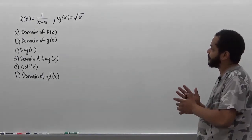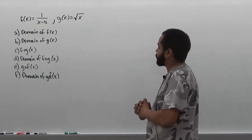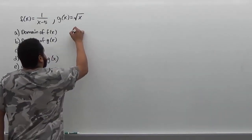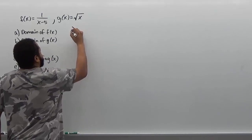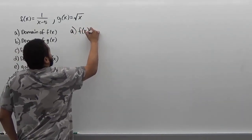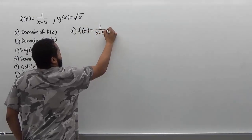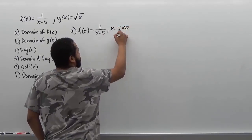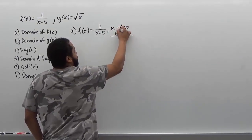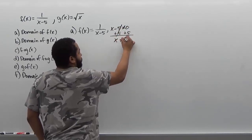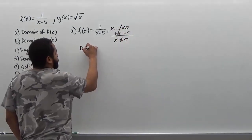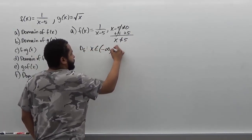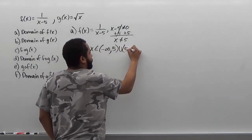We have f equal to 1 over x minus 5, and g is the square root of x. The domain of the f function — since we have a rational expression — we know that the denominator can never be equivalent to 0. So we look at our condition for 1 over x minus 5, knowing the only condition is the exception of when the denominator is 0. We set x minus 5 not equal to 0, add over the 5, and we have x cannot equal positive 5. So our domain for the f function is x belongs to negative infinity to positive 5, union 5 to infinity.